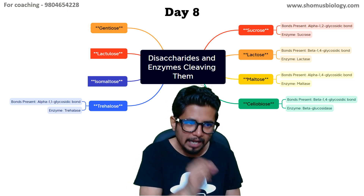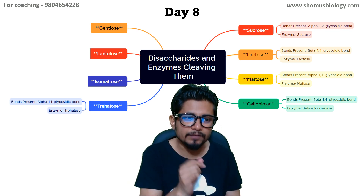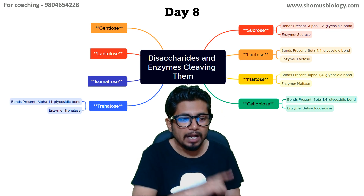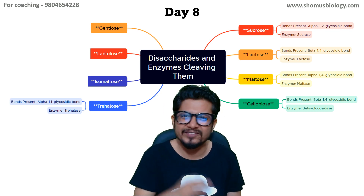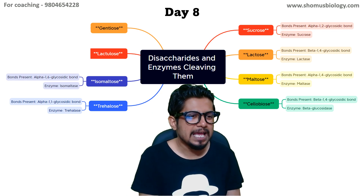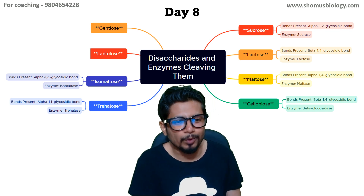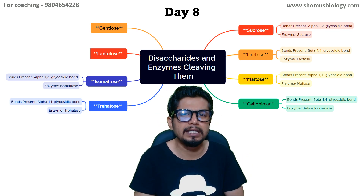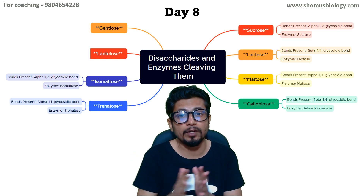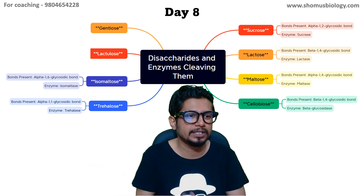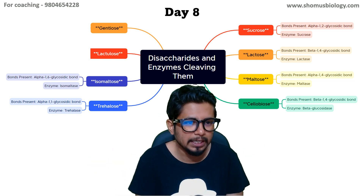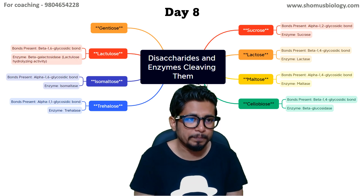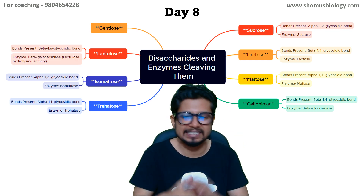Trehalose has an alpha 1-1 glycosidic bond — very rare — cleaved by trehalase. Then isomaltose has an alpha 1-6 glycosidic bond, which is also seen in polysaccharides where branching is visible. The enzyme for isomaltose is isomaltase.